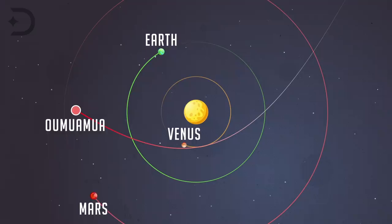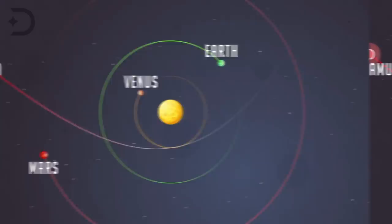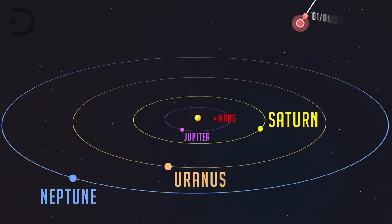Researchers have tried to identify the star system where Oumuamua came from and were able to combine data from the European Space Agency's Gaia mission that pinpoints the precise location of stars. Using this data, it was identified that it likely came from a binary star system.